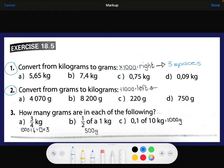For number two, we're going from grams to kilograms, which means we're dividing by a thousand. So our comma is moving to the left three spaces.